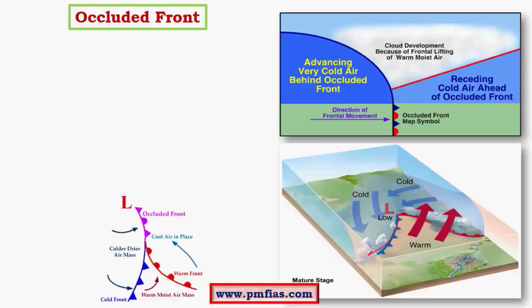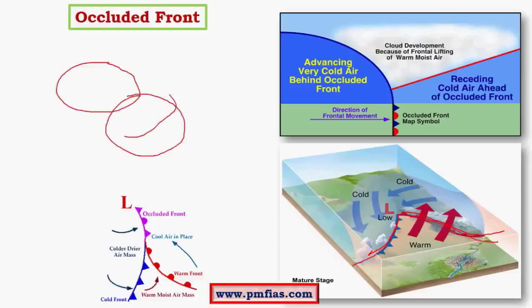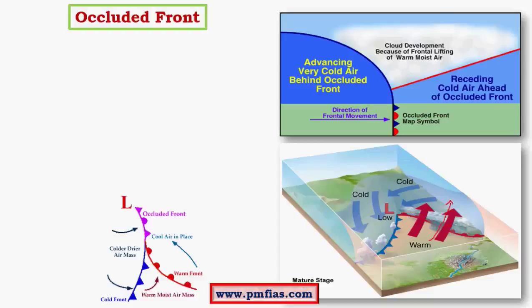Here we have a cold front and a warm front. What happens during convergence is that one air mass pushes in one direction and the other pushes the other way. The warm air mass slides over the colder air mass, creating a warm front. The cold air mass moves at much greater speed and with its movement, the warm air mass is uplifted. This is nothing but occlusion.